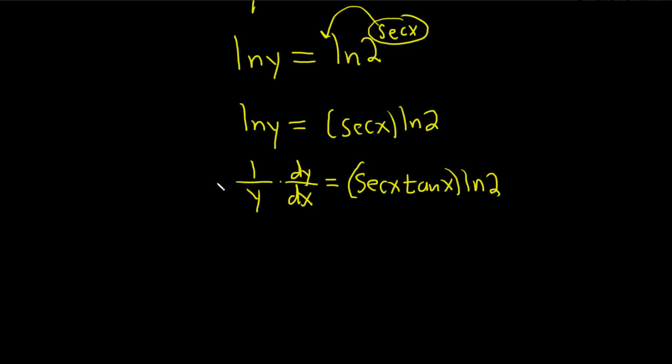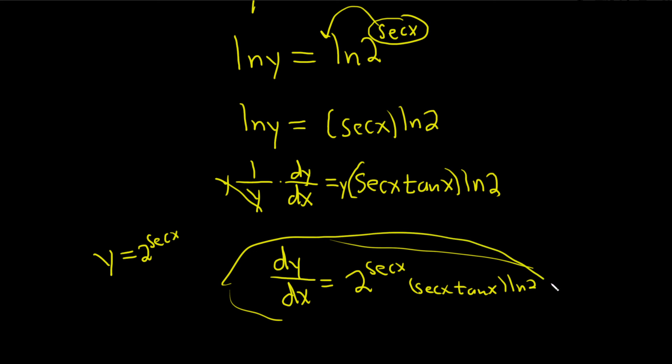And then the last step is to multiply by y, so I'll put a y here and put a y here. These cancel, so we get dy dx equals, and y is what we started with. It's 2 to the secant of x, so replacing that, we have 2 to the secant of x, and then we have secant x, tangent x. This is downstairs, right? This is not part of the exponent. And then we still have the natural log of 2. So that would be the final answer.